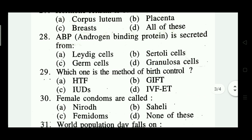Question number twenty-eight: ABP (androgen binding protein) is secreted from — Leydig cells, Sertoli cells, germ cells, granulosa cells. Which one is correct? That is Sertoli cells — option B.